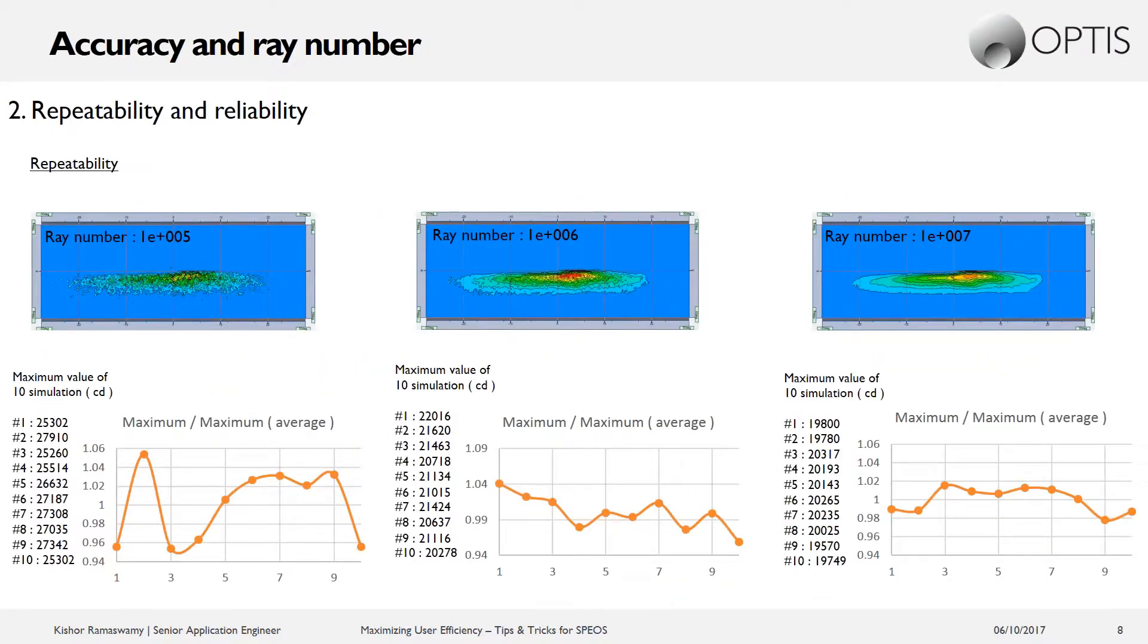So when we talk about precision, the first thing that we talk about is repeatability and reliability. So if I run a simulation and I get a result coming back to me, how repeatable is that result? If I run the same simulation 10 times, will I be getting the same results on every iteration? And this is largely affected by the number of rays in the simulation.